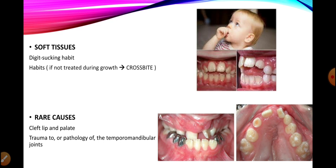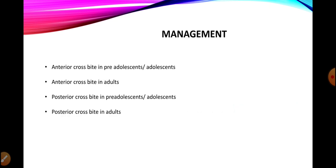For soft tissue causes, digit sucking or non-nutritive habits raise negative pressure inside the oral cavity, pushing the maxillary teeth more palatally and causing posterior crossbite. Rare causes include cleft lip and palate — where restriction of maxillary growth in all planes establishes posterior or anterior crossbite — and TMJ trauma or asymmetric growth causing a crossbite. That is all for today; we will discuss the management protocols of crossbite in the next session. Stay home, stay safe. Allah Hafiz.